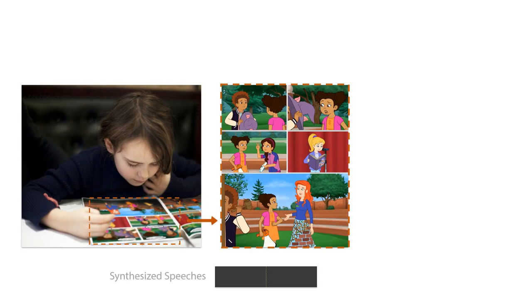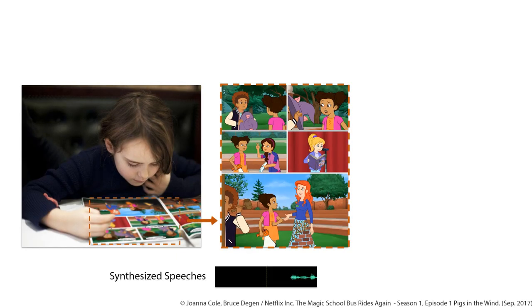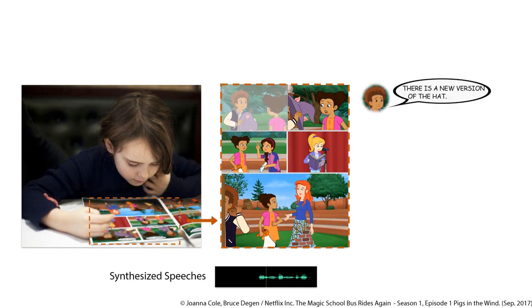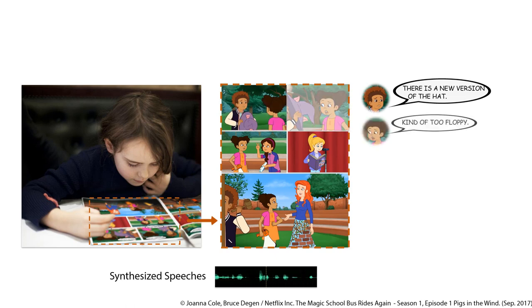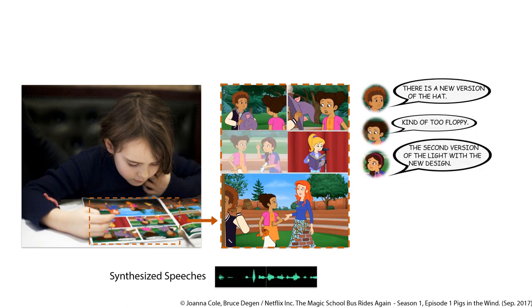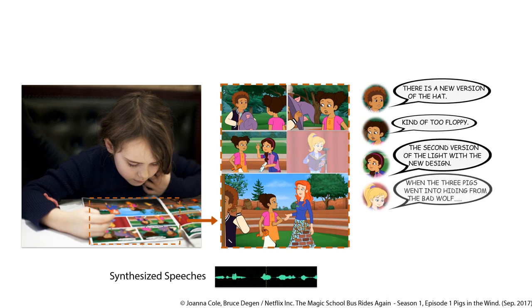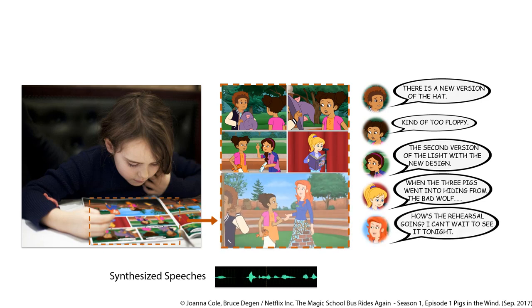Here are some synthesis results. There is a new version of the hat — kind of too floppy. The second version of the light with the new design. When the three little pigs went into hiding from the bad wolf. How's the rehearsal going? I can't wait to see it tonight.